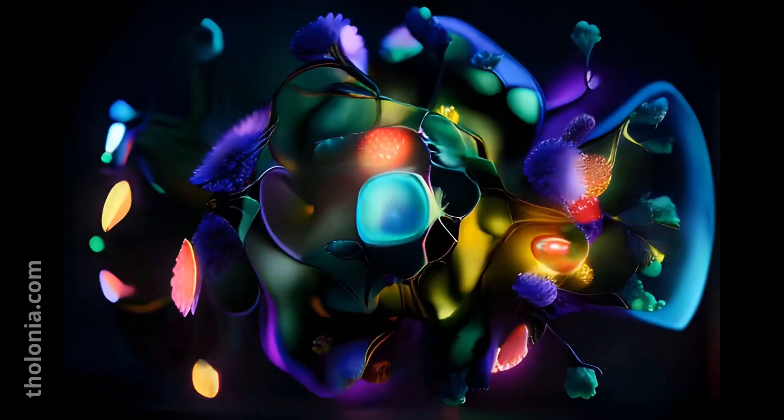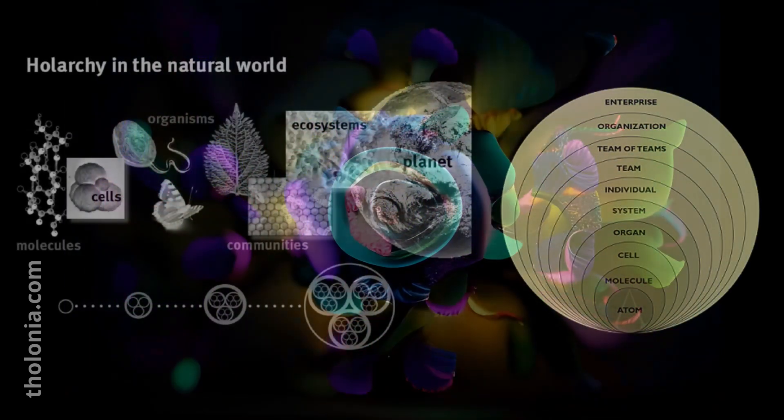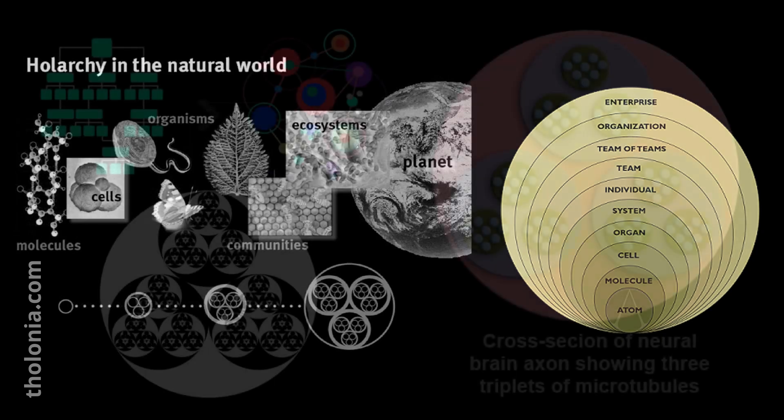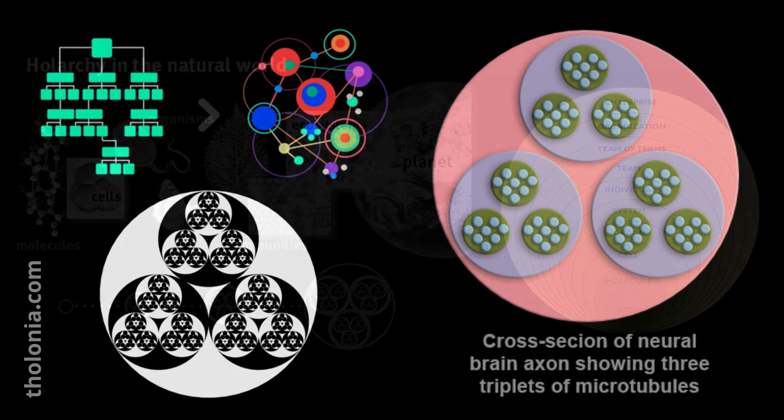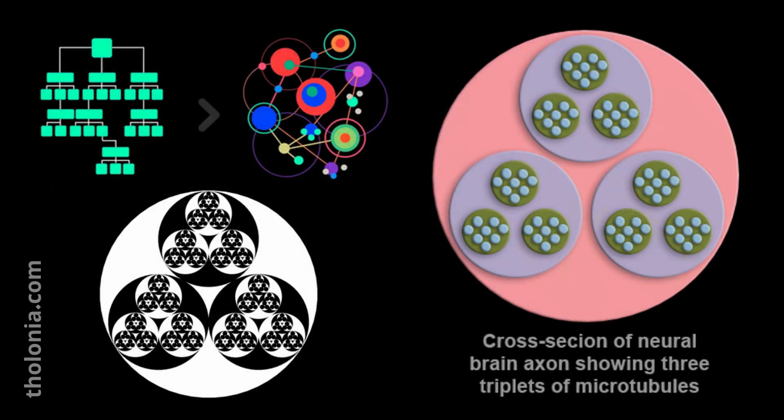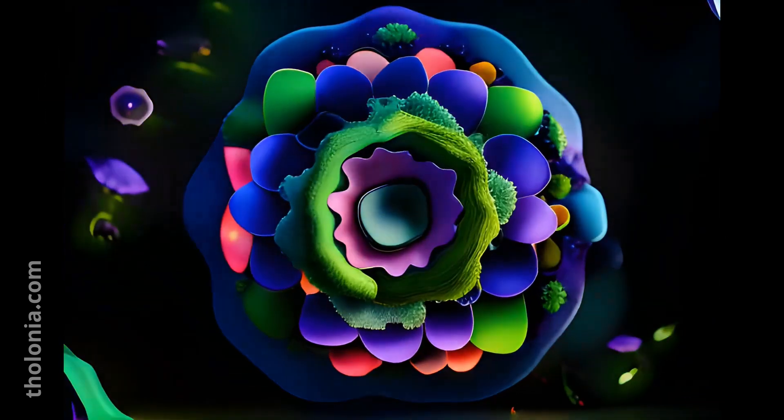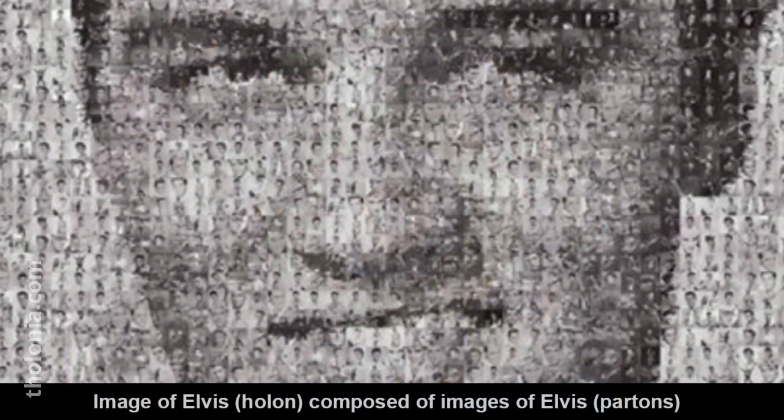Briefly explain what a holarchy is. A holarchy is an organizational system where each level, called a holon, acts as both an independent whole and a part of a larger whole. Holons maintain autonomy while contributing to the higher level's integrity and function, emphasizing interconnectedness and interdependence. This contrasts with a traditional hierarchy, which focuses on rank and subordination. What constitutes something being whole? Something is whole when it is complete, coherent, functional, and has a distinct identity. Its parts are integrated, working together harmoniously within its context. Each whole is part of a larger system, nesting within other holons.